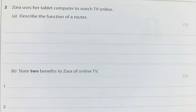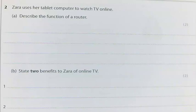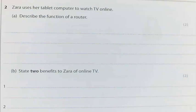Zara uses a tablet computer to watch TV online. Describe the function of a router. When we think about data travelling across a network, we think about packets. It's broken into packets and it travels in packets. Those packets have specific information on them to allow them to arrive at their destination. This data could be anything — a video, an email, anything like that.